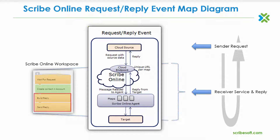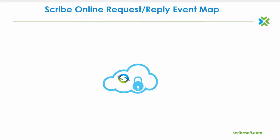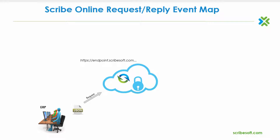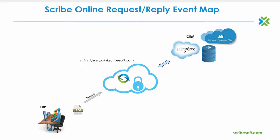Let's look at this again from a different perspective. ScribeOnline will auto-generate a secure cloud endpoint URL that will be used by the custom application to post a request transaction in JSON (JavaScript Object Notation) format. The ScribeOnline request-reply map will process the request and then integrate the payload into the target system or systems. Upon completion, a return value status is provided indicating to the custom application the results of the integration activity.